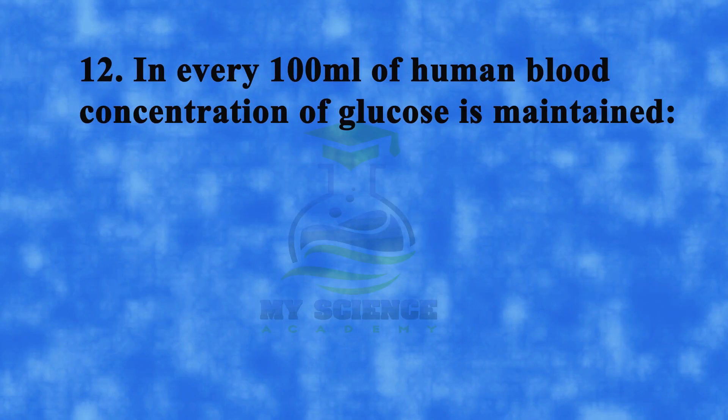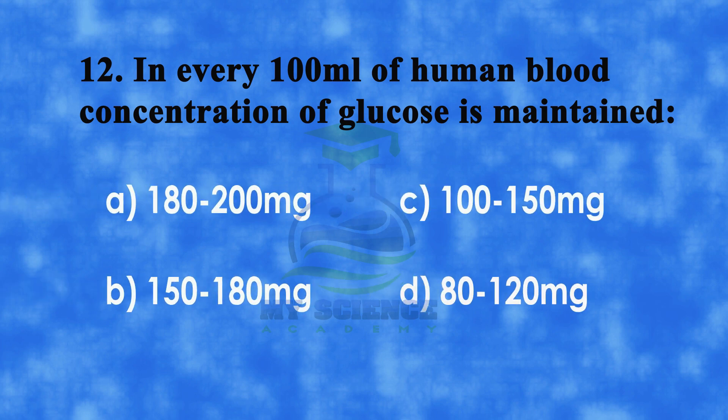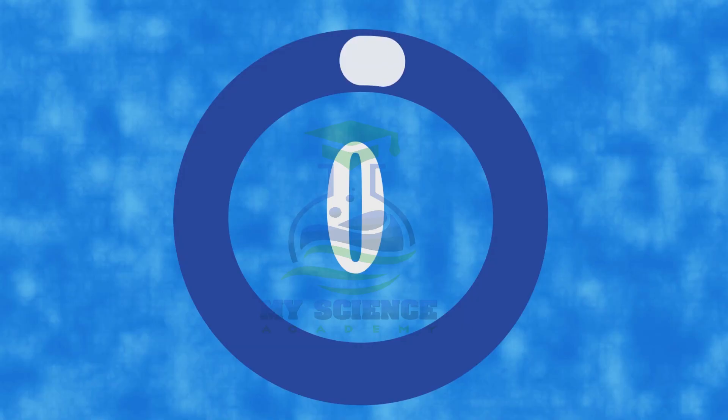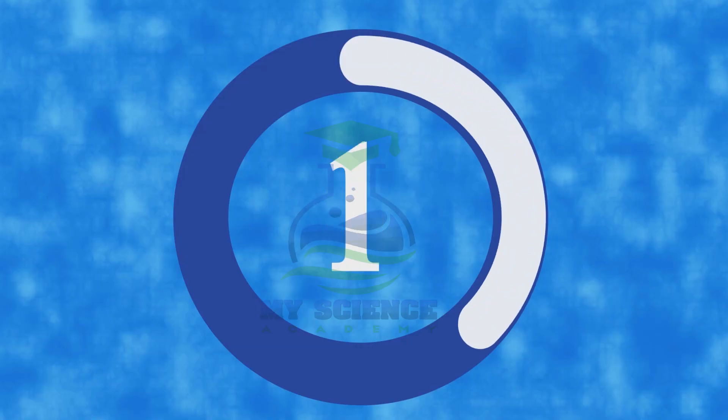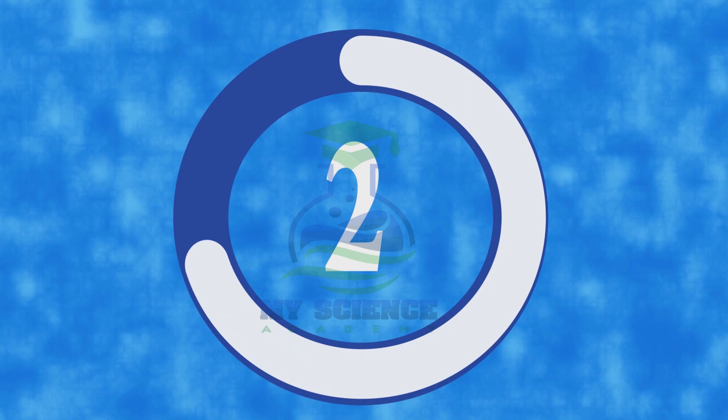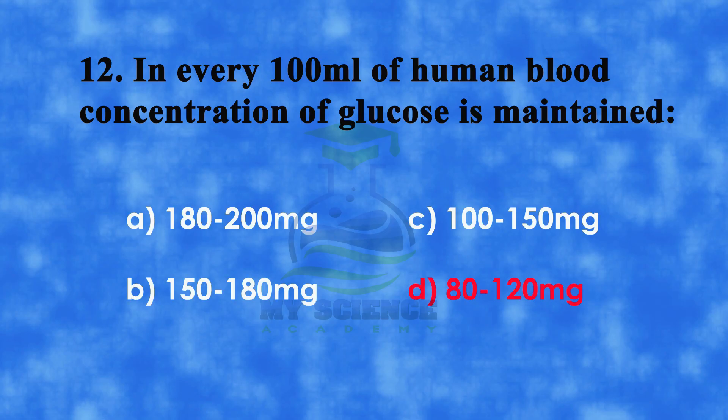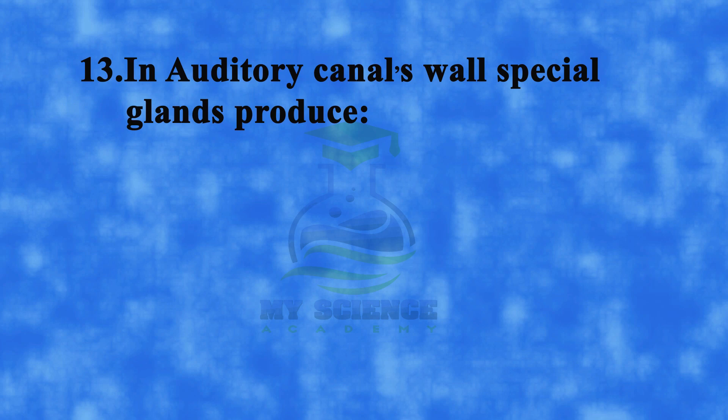Number 12: In every 100 ml of human blood, concentration of glucose is maintained. A: 180-200 mg, B: 150-180 mg, C: 100-150 mg, or D: 80-120 mg. And correct answer is D: 80-120 mg.